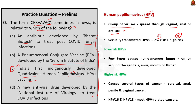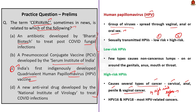High risk HPVs can cause several types of cancer like cervical, anal, penile, and vaginal cancer. There are about 14 high risk HPV types. Among them, HPV 16 and HPV 18 are responsible for most HPV-related cancers. Nearly 83% of invasive cervical cancers in India and 70% of cases worldwide are attributed to HPV types 16 and 18.